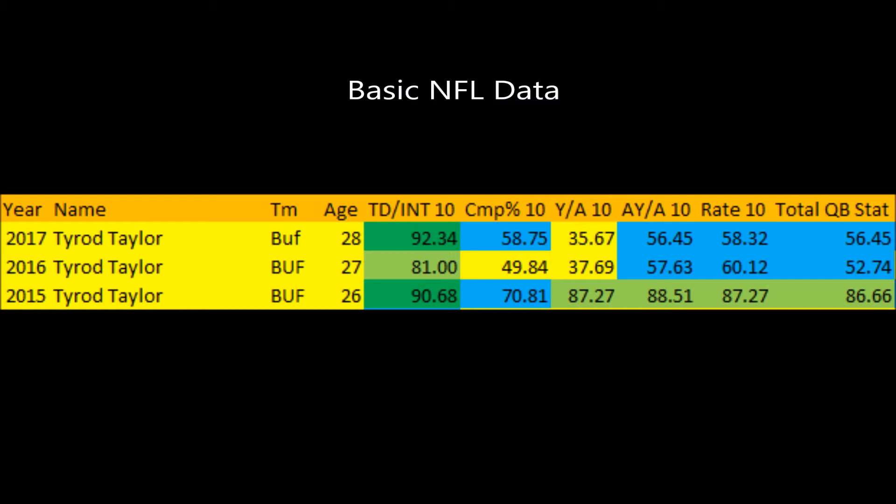He followed it up in 2017 with almost an identical type of season — a little bit better touchdown-to-interception ratio, a little bit better completion percentage, but pretty much the same issues in terms of yards per attempt, adjusted yards per attempt, and quarterback rating. A lot of Tyrod Taylor's issues from 2016 to 2017 have dealt with just the inability to get a high amount of yards per attempt — the offense has not been the most explosive down-the-field type of thing over the last two seasons. Has he been a terrible quarterback? Not necessarily — he does have a lot of positives indicating an average quarterback, but definitely not a top-ten quarterback.